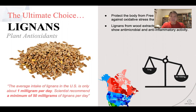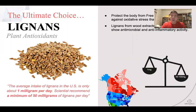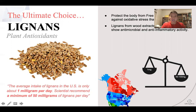A question people always ask is: how much lignan should I be getting on a daily basis? The average intake of lignans in the US is only about one milligram per day. Scientists recommend a minimum of 50 to 100 milligrams of lignans per day. Think about it — what did you eat today or yesterday? Did you eat enough fresh fruits and vegetables? Because if you add heat or cook those things, you actually kill the lignans. It has to be fresh. So it's no surprise that most people don't quite get enough lignans on a daily basis.